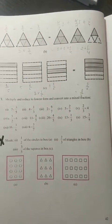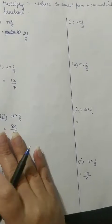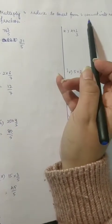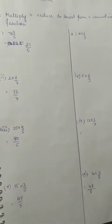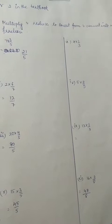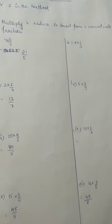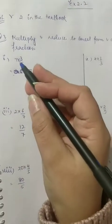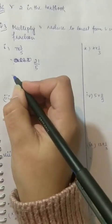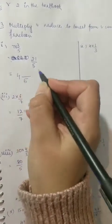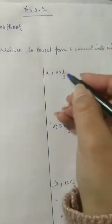Now question number 3, we'll be doing it in our notebooks. Question number 3 is something that we have done earlier also: multiply and reduce to the lowest form and convert it into mixed fraction. ठीक है, multiply करना है, fractions से जो भी numbers हैं, उसके बाद lowest form में common factors cancel out करने हैं and उन्हें mixed fraction में convert करना है. So the first one: 7 into 3 is 21 divided by 5. This is an improper fraction. 5 fours are 20, here it is 21, so remainder is 1. We converted this into a mixed fraction.